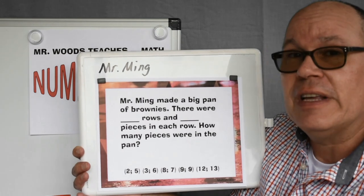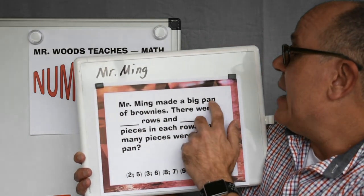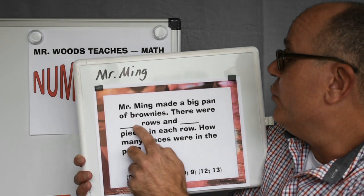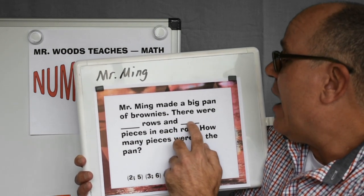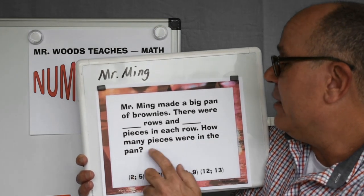I'm going to go ahead and use the first set of numbers here today. Mr. Ming made a big pan of brownies. There were two rows and five pieces in each row. How many pieces were in the pan?